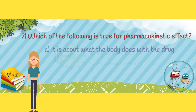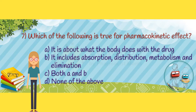Question 7. Which of the following is true for pharmacokinetic effect? Option A: it is about what the body does with the drug. Option B: it includes absorption, distribution, metabolism, and elimination. Option C: both options A and B. Option D: none of the above.